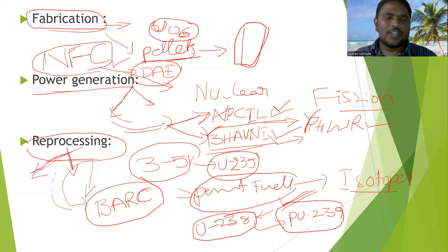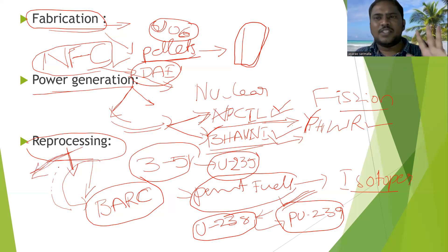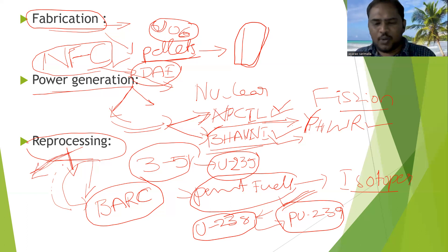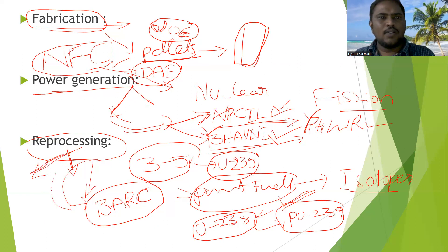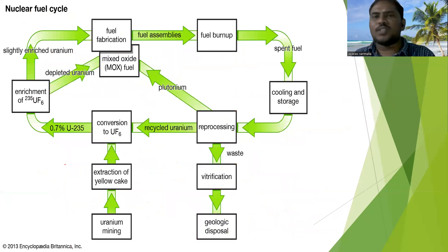So, these are the six major steps of the nuclear fuel cycle: Survey and Exploration, Mining and Milling, Enrichment, Fabrication, Power Generation, and Reprocessing.